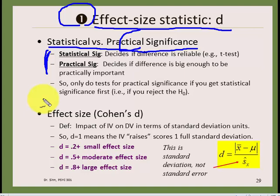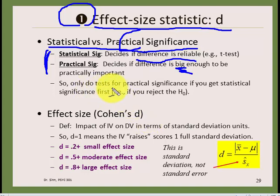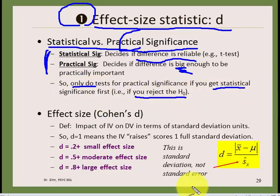Practical significance is the second follow-up question we ask whenever we find something is statistically significant. Statistical significance decides if the difference is reliable — something we can trust. Practical significance then decides if it's big enough that we're going to care about it. You only do tests for practical significance if you first have statistical significance — in other words, if you reject the null hypothesis.